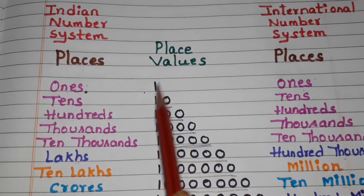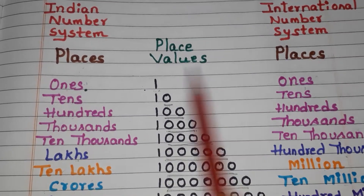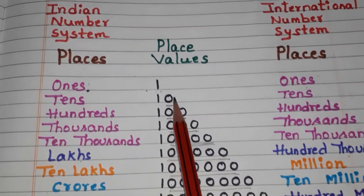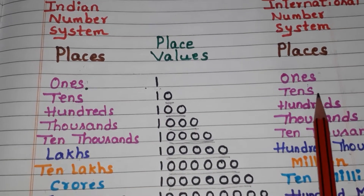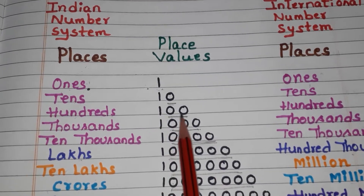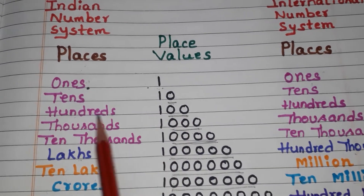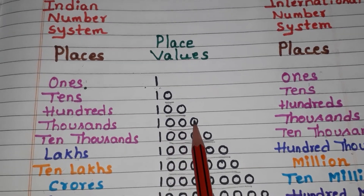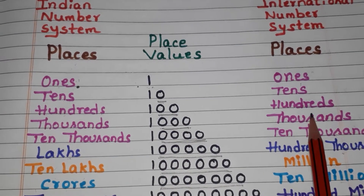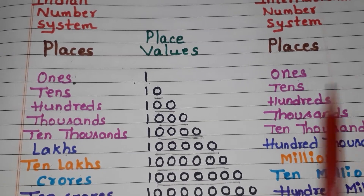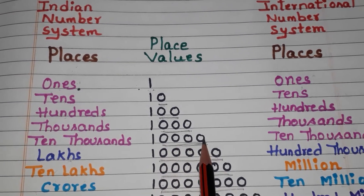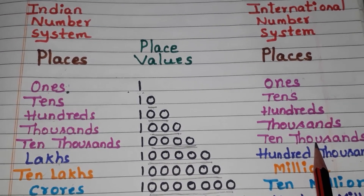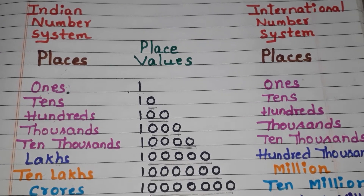Here 1 is there — in both systems we call it 1s. Here 10 is there — in both systems we call it 10s. Here 2 zeros are there — in both systems we call it 100s. Here 3 zeros are there — in both systems we call it 1000s. Here 4 zeros are there — in both systems we call it 10,000s. Till here, both systems are the same.